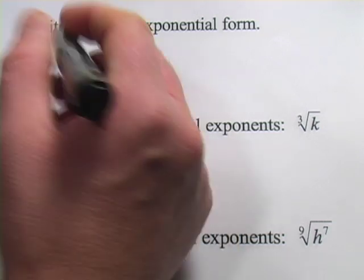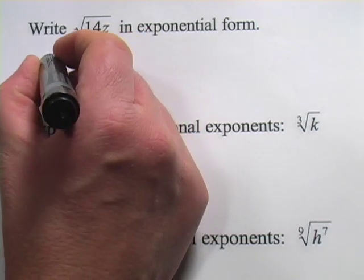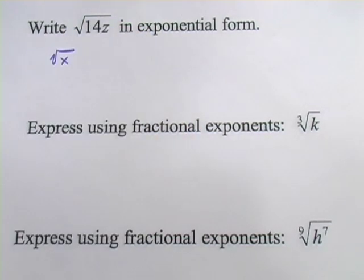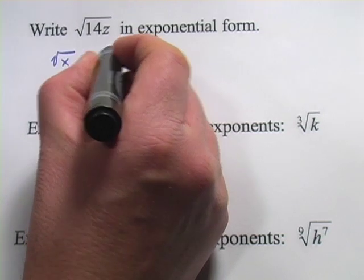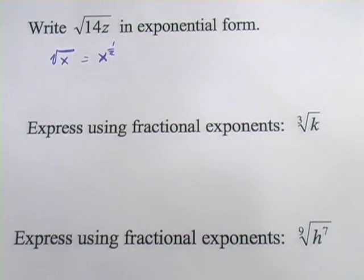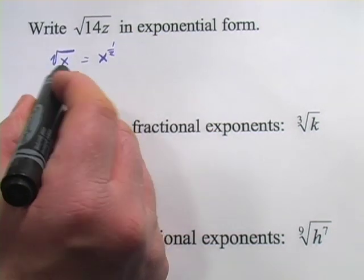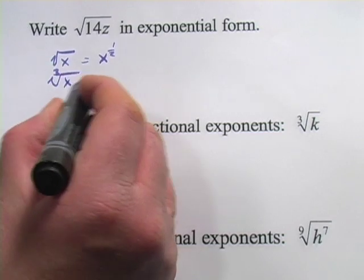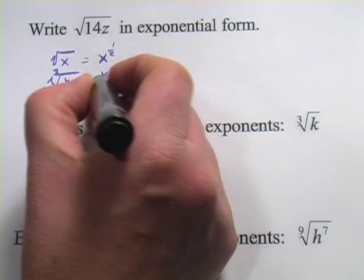So the thing to know here is that if you have the square root of x, that is x to the 1 half power. If you had the cube root of x, that would be x to the 1 third power.